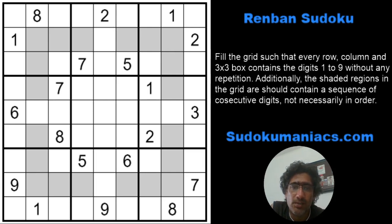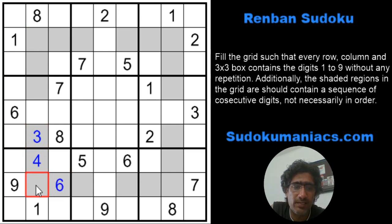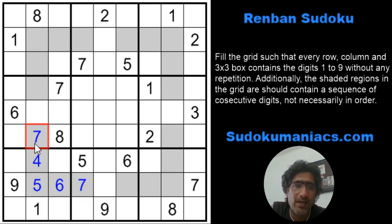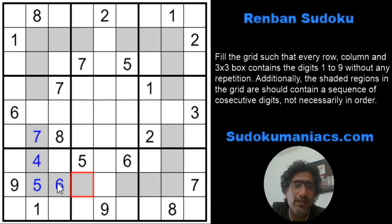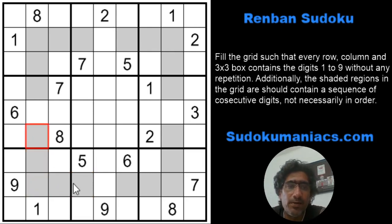For example, a region could have 3, 4, 6, 7, 5 — they work out to the same consecutive set. Or I can interchange them, but I will always have 3, 4, 5, 6, 7 which are consecutive to each other. So each marked region will have a set of consecutive digits.